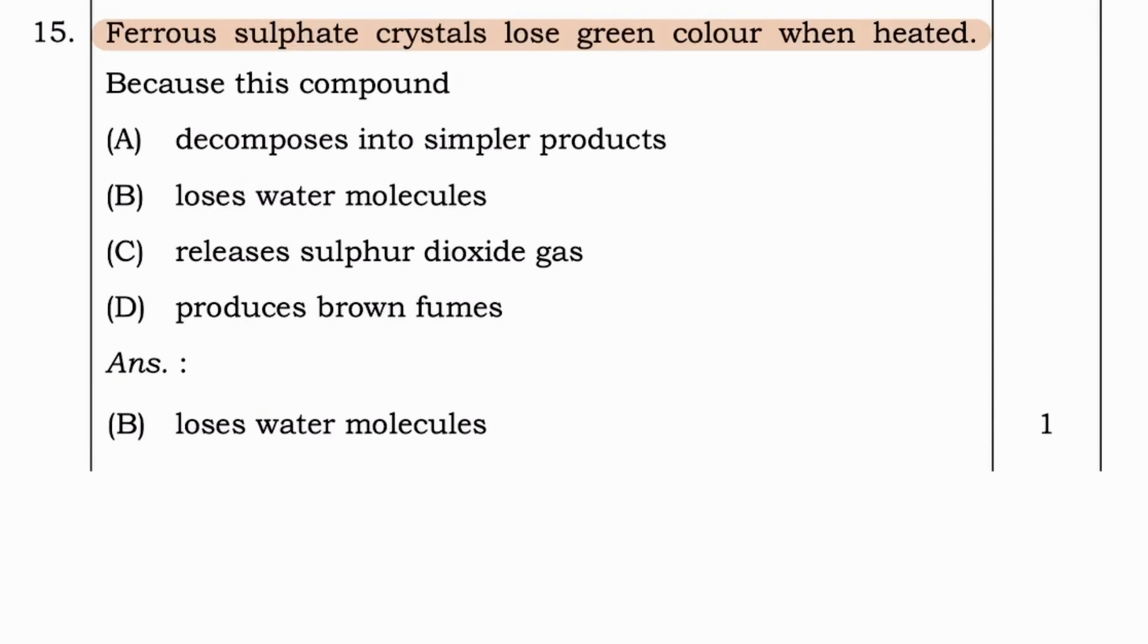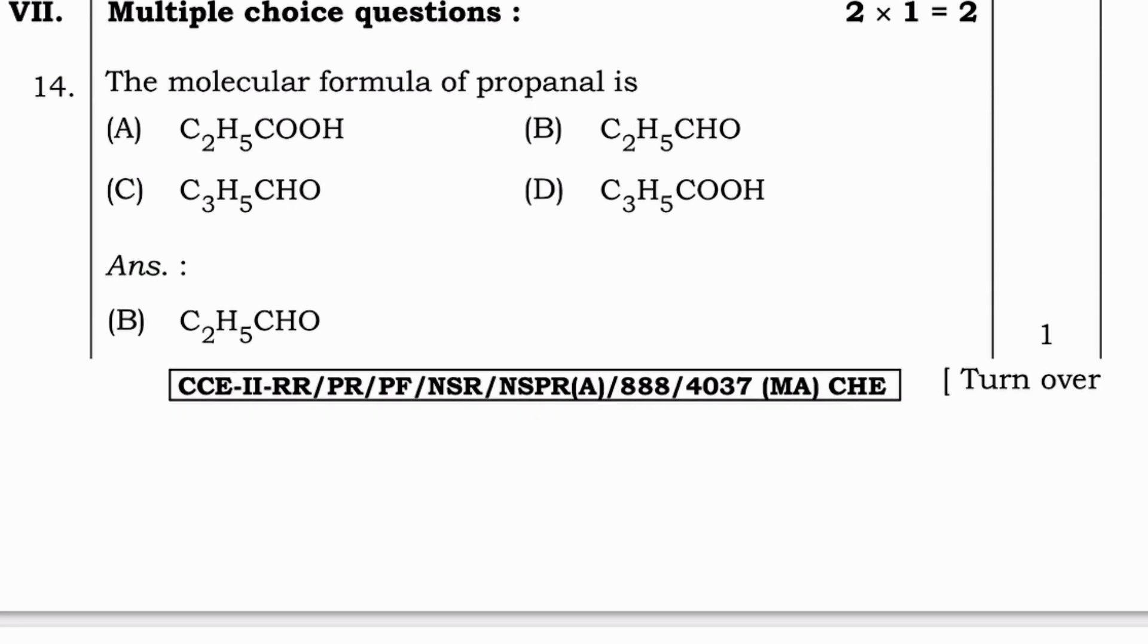Next question. Ferrous sulphate crystals lose green color when heated because this compound decomposes into simpler products, loses water molecules, releases sulfur dioxide gas, or produces brown fumes. Answer is option B loses water molecules.